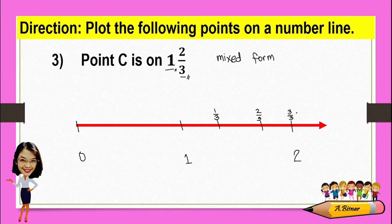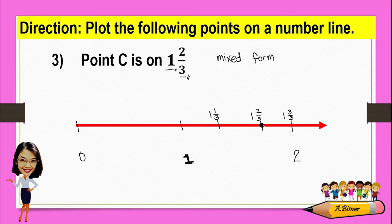and three-thirds. Three-thirds is equivalent to one, but the location is already greater than one. Which means this is one and one-third, one and two-thirds, one and three-thirds. One plus one, because three over three is one — that's why it equals two. From here, we can clearly see where point C is located. So this is point C.